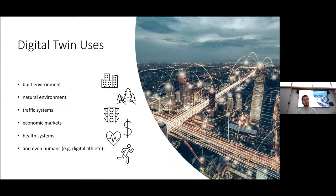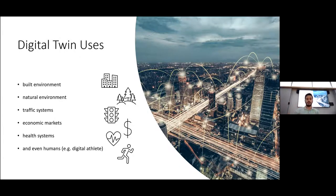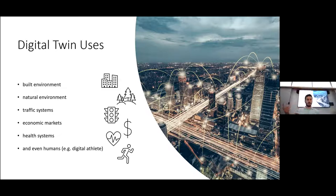Digital twins are not only used in the built environment — they didn't start in construction. They started in the aerospace industry, and some of the most advanced uses are in factories and the industrial field. They can be used in urban traffic systems, even in replicating economic markets and predicting market behaviors — that's essentially a digital twin of an economic market if you have prediction models and big data.